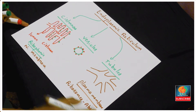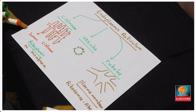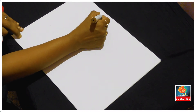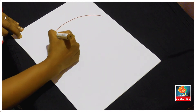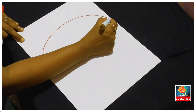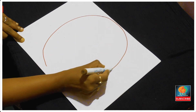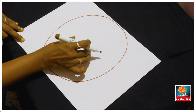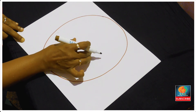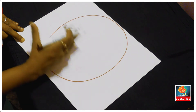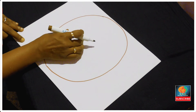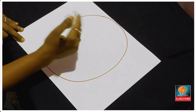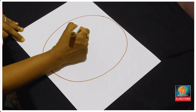Now we'll draw the complete endoplasmic reticulum as it looks in the cell. We need to show the plasma membrane to illustrate the connection of tubules. The nucleus is located in the center in the animal cell, but I am drawing it at the periphery for clarity — don't get confused.